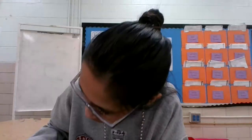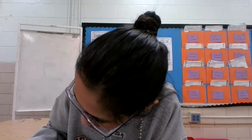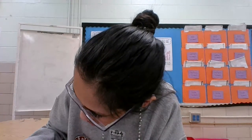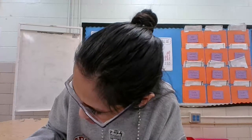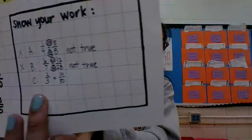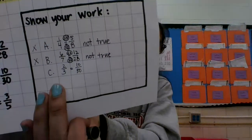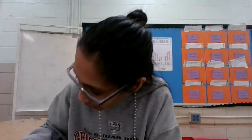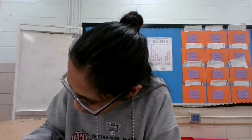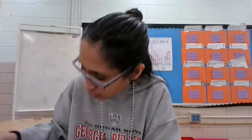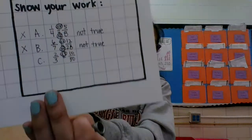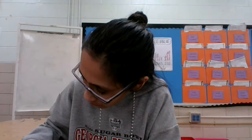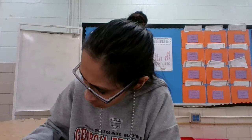All right, let's write C: two-thirds equals ten-thirtieths. How do I go from two to ten? I multiply it by five. And how do I go from three to thirty? Multiply it by ten. Are these equivalent? Nope — not true.